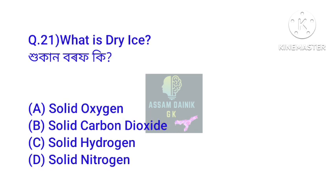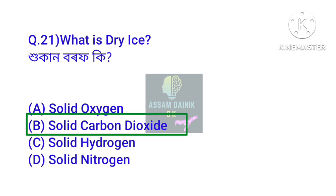Question number 21. Hukan borov ki — what is dry ice? The answer is Solid carbon dioxide. Option number B.